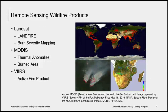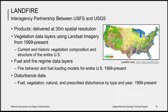Landsat data, available at 30-meter spatial resolution every 16 days, can provide information on vegetation health and post-fire mapping. The Moderate Resolution Imaging Spectroradiometer, or MODIS, is a useful sensor for wildfires due to its high temporal resolution — images are available daily. The VIIRS sensor is similar to MODIS in terms of temporal resolution, with some spatial resolution improvements. We will be providing information about products generated from these sensors, including Land Fire, thermal anomalies, burned area, and the active fire product.